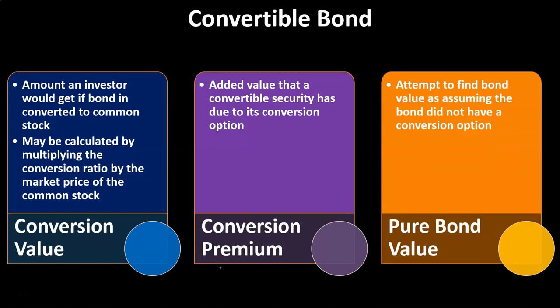The pure bond value is the attempt to find the bond value assuming the bond did not have a conversion option. This is the other angle from which we can look at these convertible securities: instead of converting to stocks, we look at similar bonds that do not have the conversion premium and figure out what their relative value would be, in an attempt to value these convertible bonds. Unlike stocks and plain bonds, convertible bonds don't have a large comparable market, so we can't simply look at other convertible bonds as easily as we could with straight bonds within similar categories.